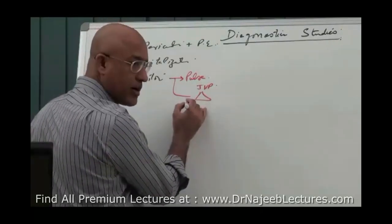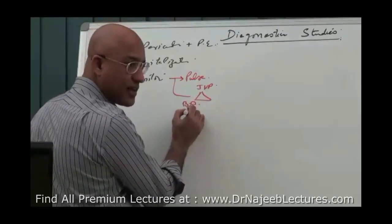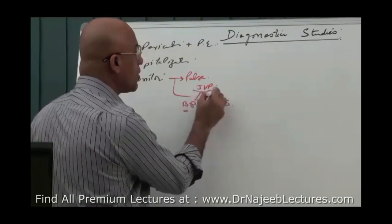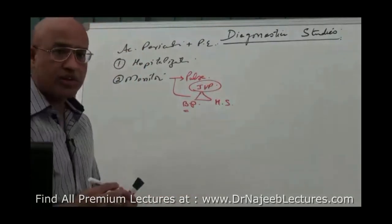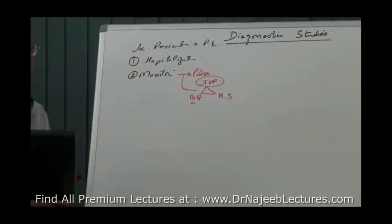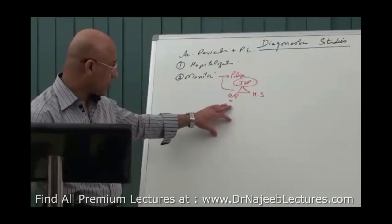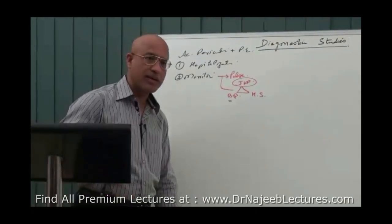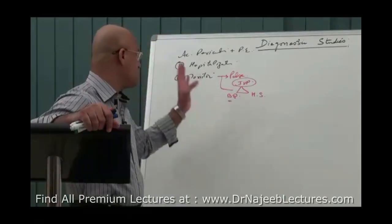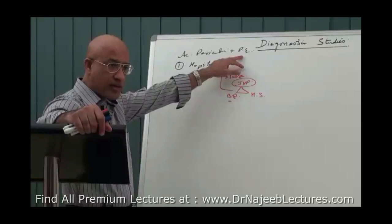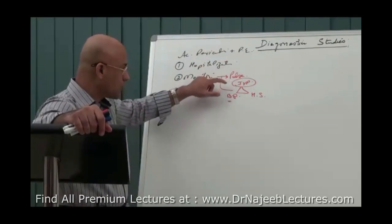You will look for blood pressure repeatedly and you will also check heart sounds. You keep looking that jugular venous pressure is not rising and blood pressure is not falling. You will also look for pulsus paradoxus and heart sounds are not becoming distant or muffled. Heart sounds may be already distant and muffled when there is pericardial effusion, but you have to look for these two things specifically.